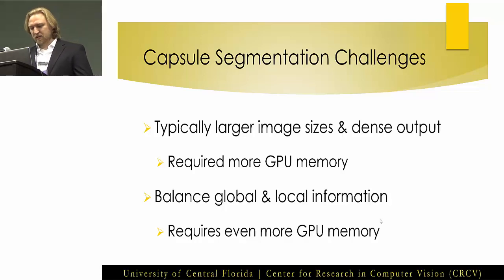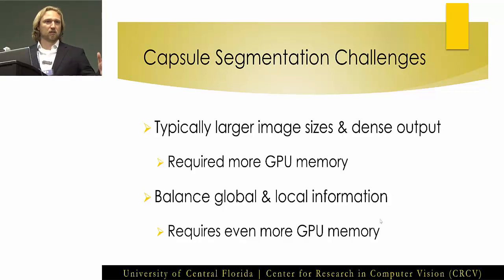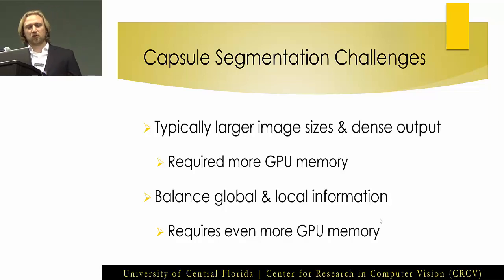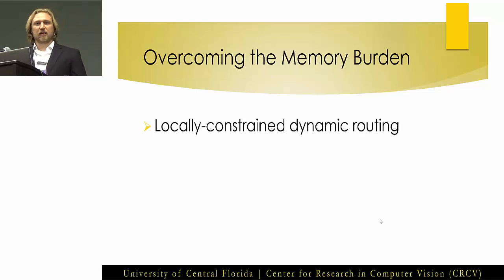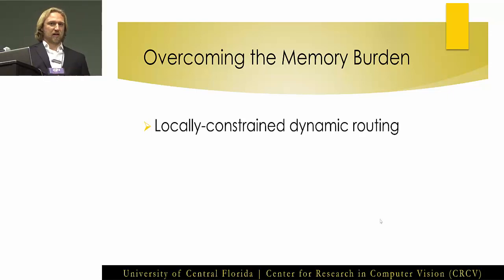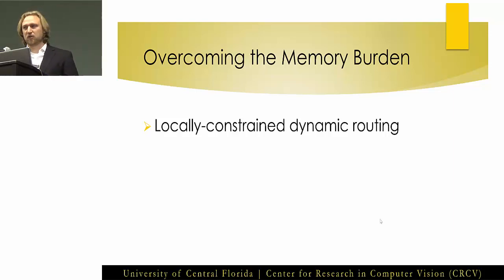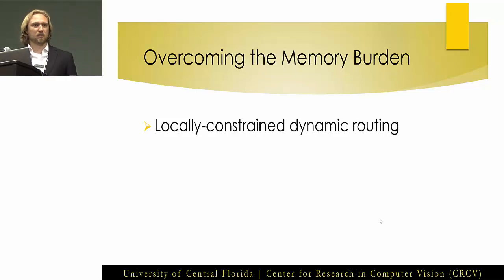In work that I published at the Medical Image Deep Learning Conference — which received the CIFAR award — we introduced a couple of novelties, one of which being locally constrained dynamic routing. Here we only route child capsules to parent capsules within a given kernel, similar to what we do with a convolutional layer as opposed to a fully connected layer. This allowed us to dramatically reduce the parameter burden, just like a convolutional operation does with CNNs.